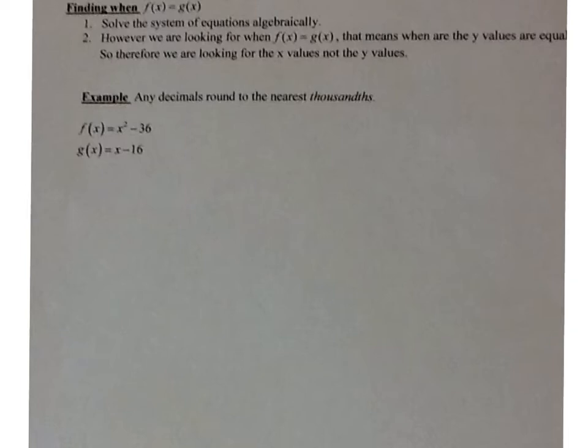So remember, this is y equals x squared minus 36, and this is y is equal to x minus 16. So I'm looking for when my y values are equal. So I'm going to set them equal to each other, x squared minus 36 is equal to x minus 16.